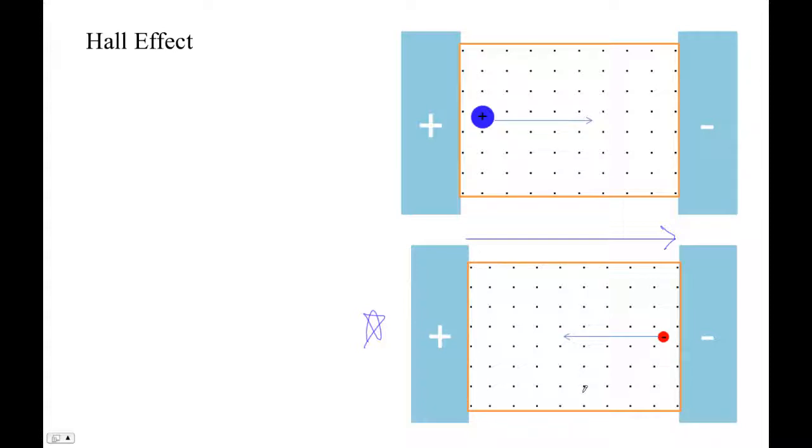Now, what happens is if you have a current carrying conductor in a magnetic field, something interesting happens. Not only is the electric field forcing these electrons this way, but the magnetic field is forcing them in a direction perpendicular to that. Let me just explain this.